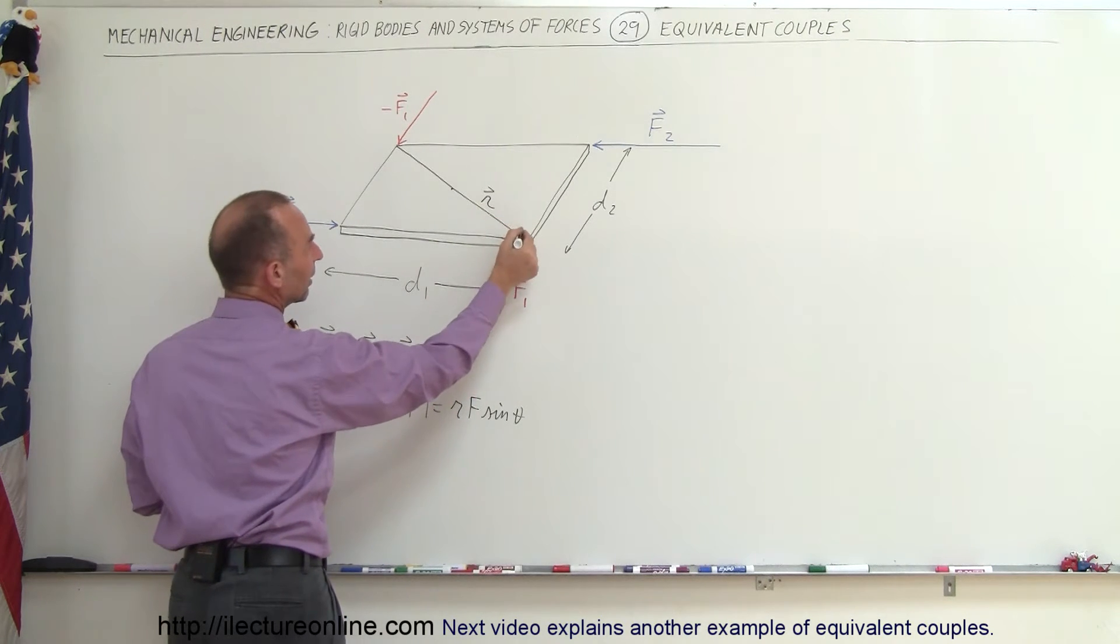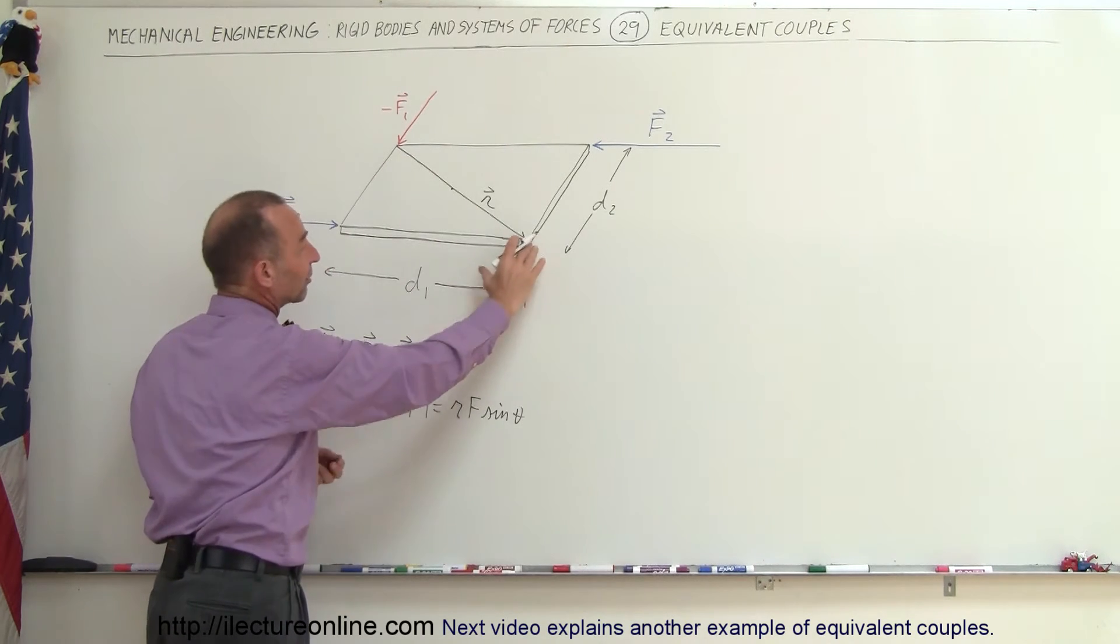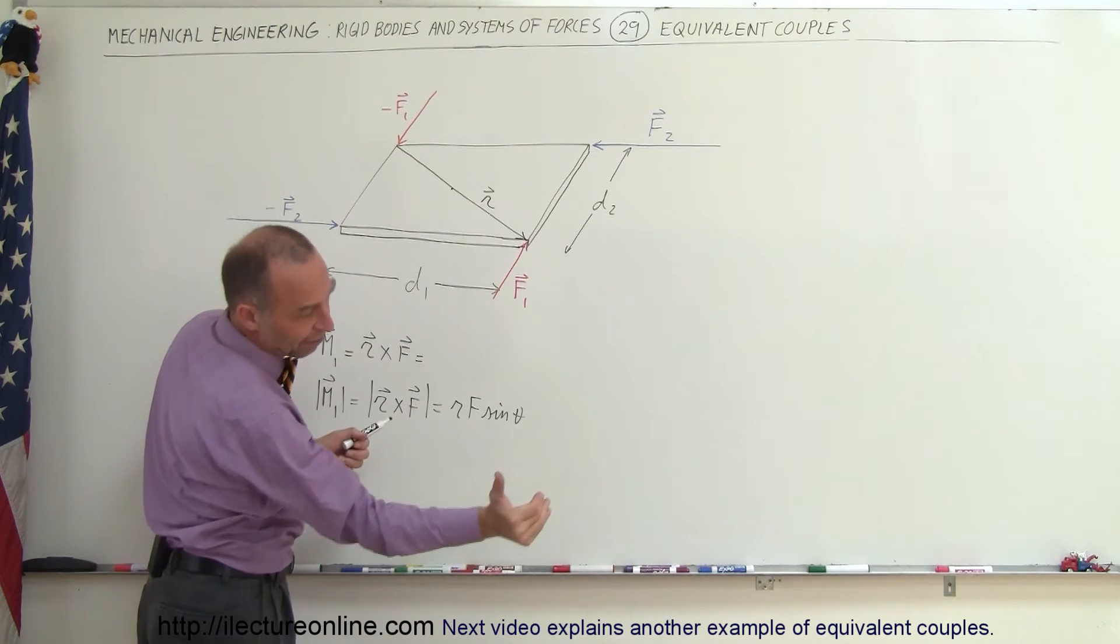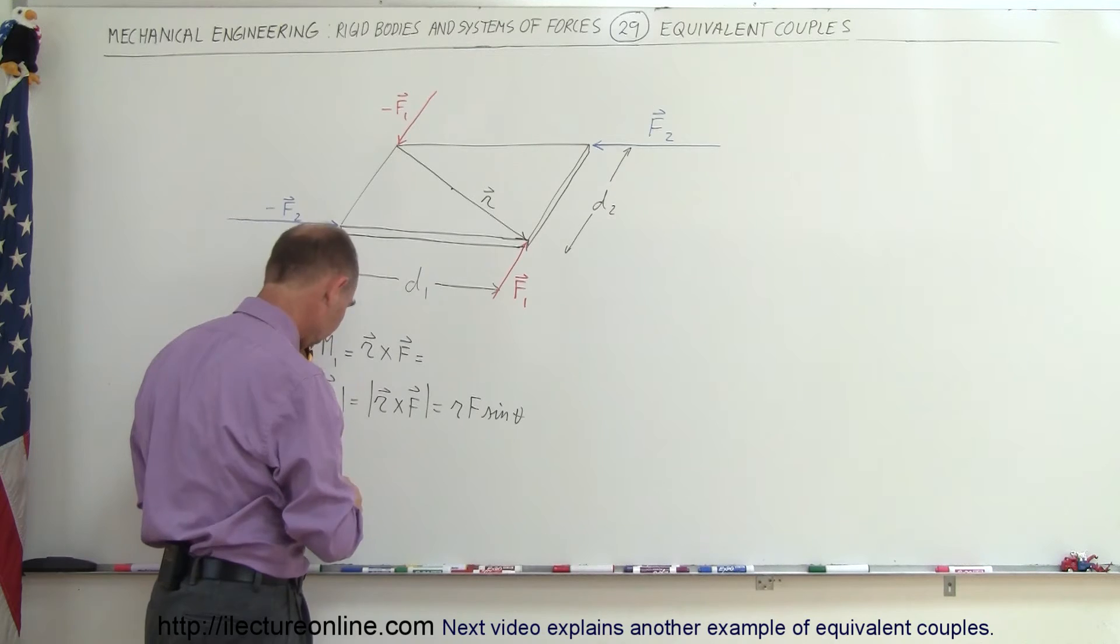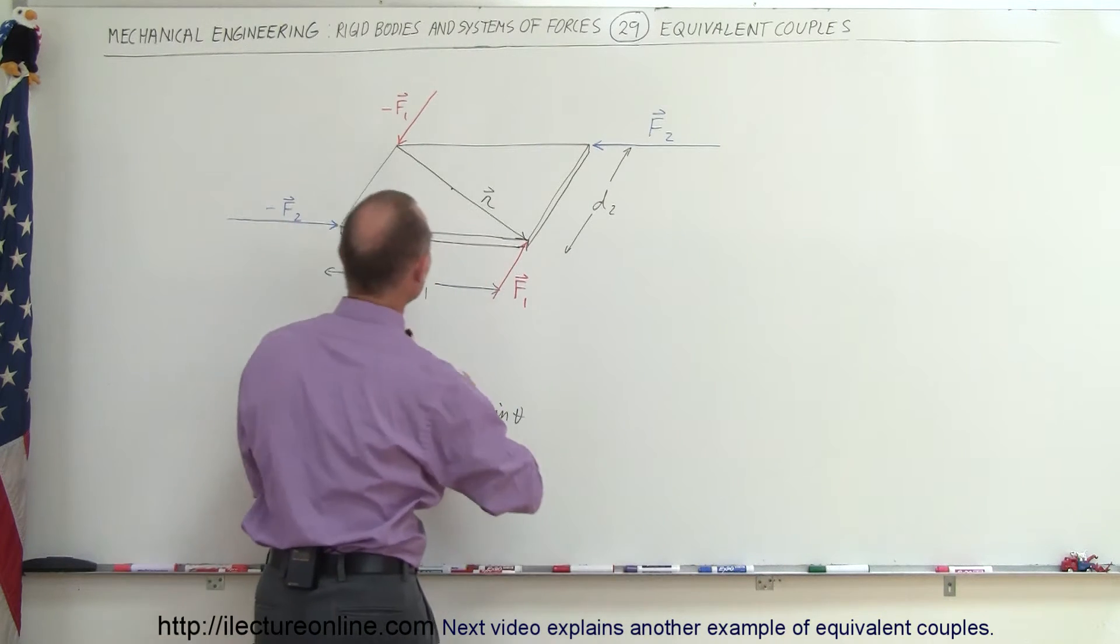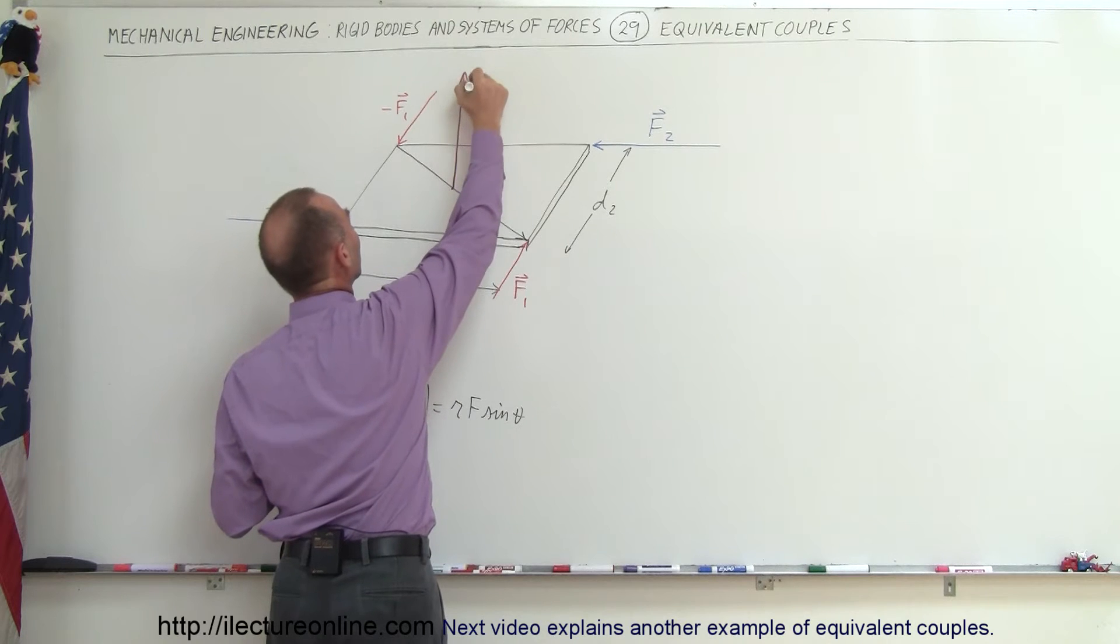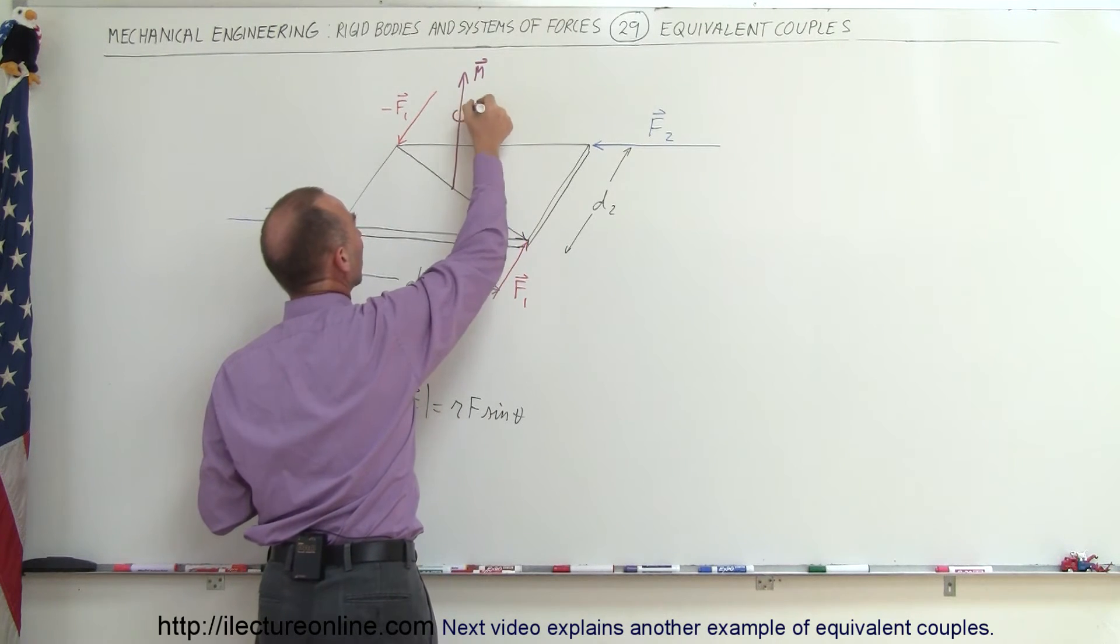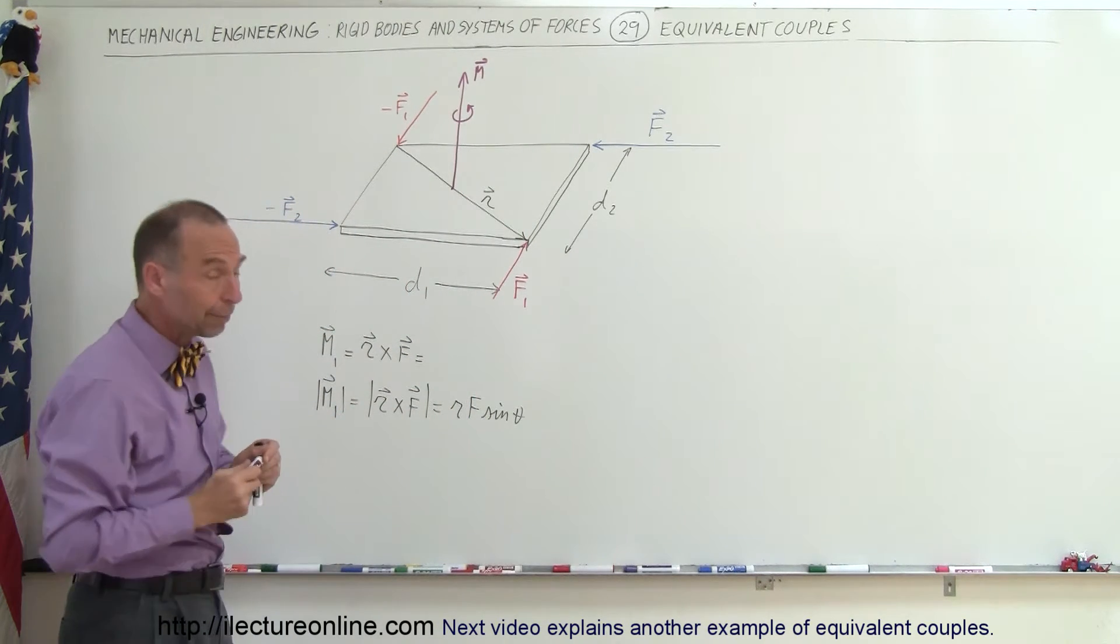So if we cross R, and I need to draw an arrow there, if we cross the R vector with F vector, we get a moment. Notice that R acts in this way, F acts in that way, so the moment sticks straight out. That would give us a moment looking like this. Notice that it would give you a counterclockwise sense. It would rotate it in a counterclockwise direction.